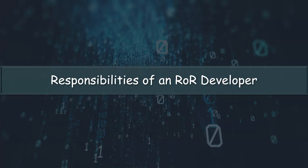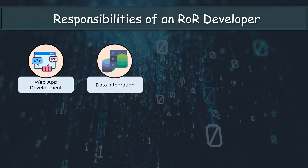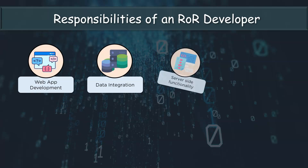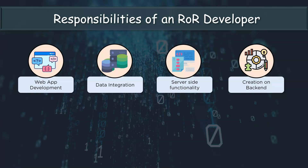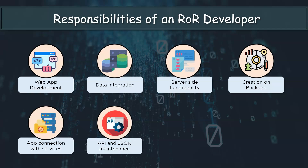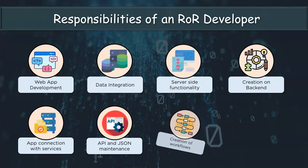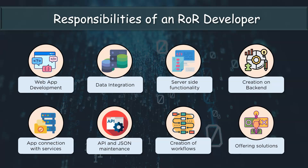Now let's look at some of the responsibilities of a Ruby on Rails developer. First up is web app development — a Ruby on Rails developer is expected to create new applications and improve existing ones. The next responsibilities include integrating data storage into current solutions, incorporating server-side functionality, working with frontend developers, making components for the backend, connecting the app to the rest of online services, and maintaining JSON and liquid-based application programming interfaces.